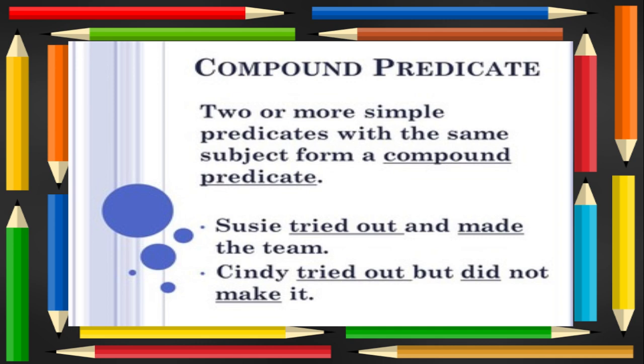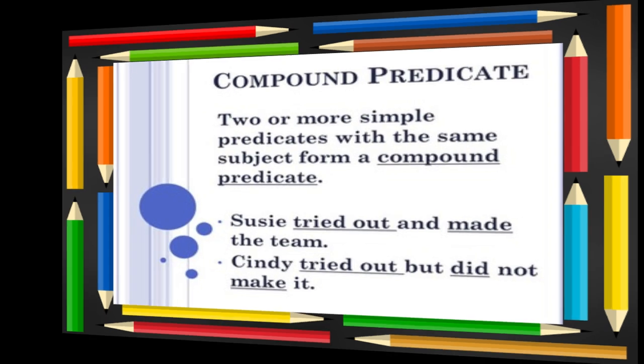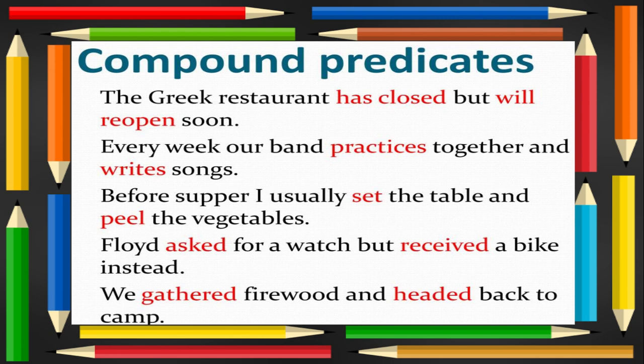Two or more simple predicates with the same subject form a compound predicate. Here are a few examples: 'Susie tried out and made the team.' 'Cindy tried out but did not make it.' 'The Greek restaurant has closed but will reopen soon.' 'Every week, our band practices together and writes songs.' 'Before supper, I usually set the table and peel the vegetables.' 'Floyd asked for a watch but received a bike instead.' 'We gathered firewood and headed back to camp.'